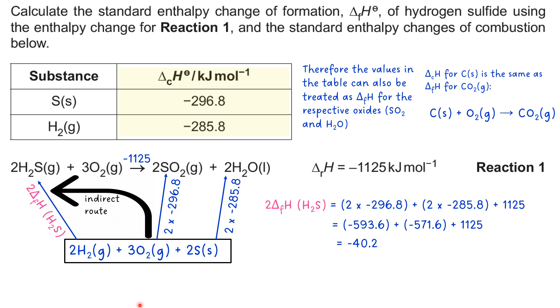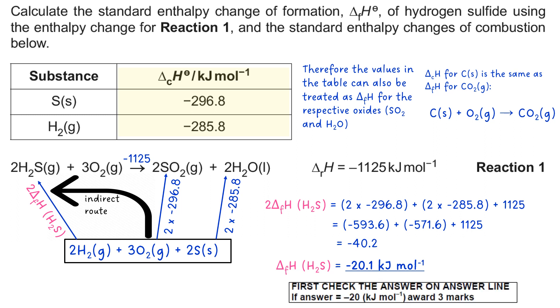So that gives us -43.2, and I'm not giving it any units just yet because if I was to put kilojoules per mole, that would be slightly incorrect because obviously we're dealing with 2 ΔfHs. So once you divide that down by two, that gives you -20.1 kilojoules per mole, and if you go to the mark scheme and check, it says the answer is -20 for three marks in total.